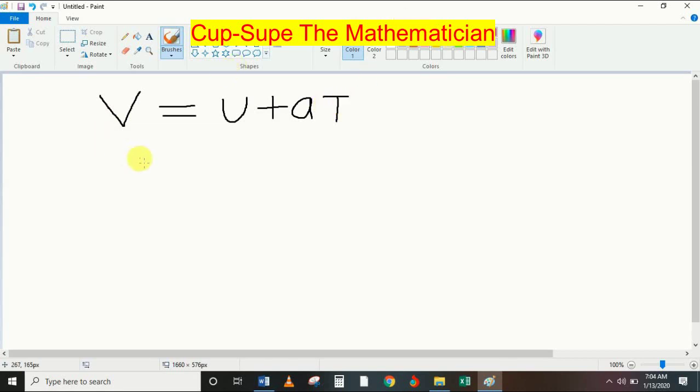First thing I'm going to do, I'm going to minus U from both sides. So I'm going to write V minus U equals U plus AT minus U.